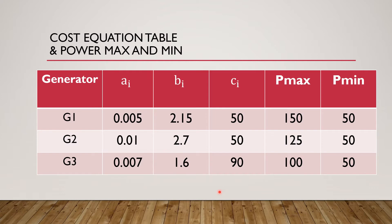This table shows the generator cost coefficients AI, BI, and CI. AI, BI, and CI are the constants of each generating unit.